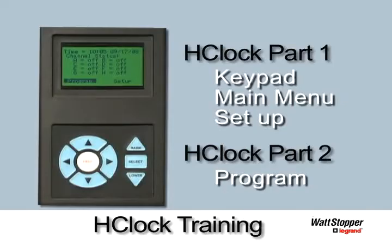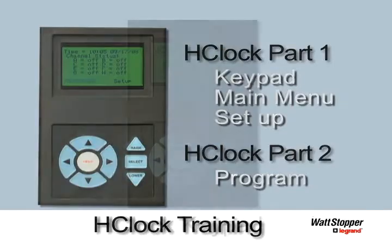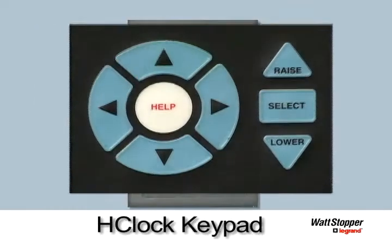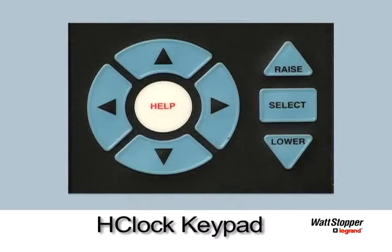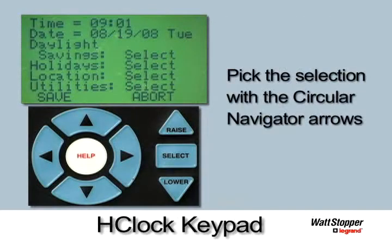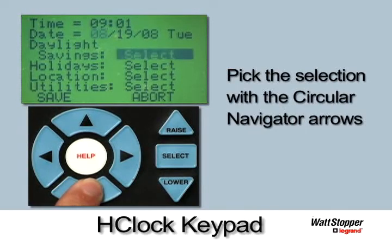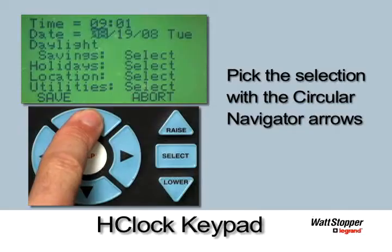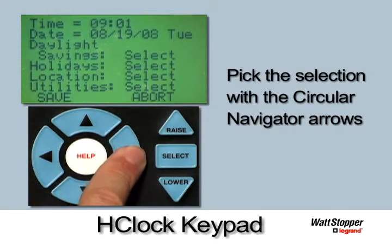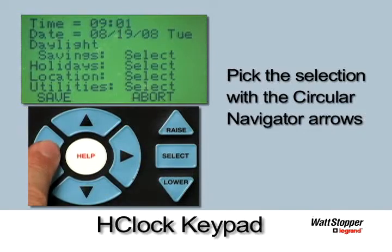Part 2 will cover programming. The keypad is equipped with cursor keys. The bottom and top arrows on the circular navigator are used to either scroll down or up through the available selections. The right and left arrows are used to further program your specific selection once you have chosen your option.